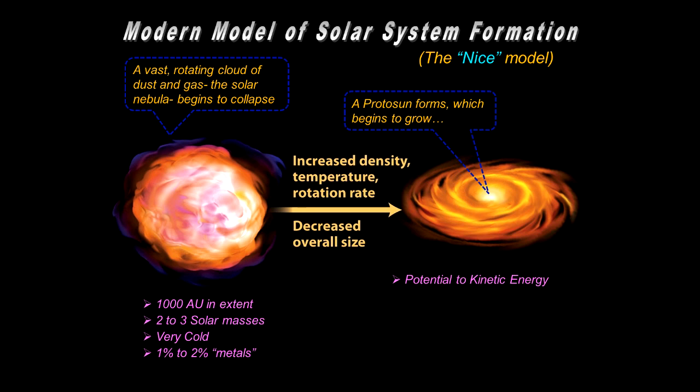So a protostar forms and that begins to grow and to shine. Well, how does that happen? Well, it turns out there's a lot of potential energy in the gas cloud. And you can imagine if you pick up a chair and drop it onto the floor, that the point of contact might gain temperature a little bit. Well, maybe you don't know that, but it actually does. Potential energy can be converted to kinetic energy, which then can be converted to heat.